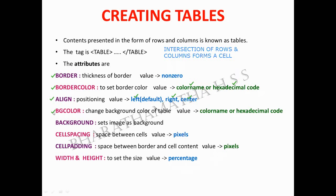The background color attribute is written as bgcolor — spelled b-g-c-o-l-o-r — with no gap in between. Its value can be either a color name or a hexadecimal code. You can also set a background image for the table using the background attribute.